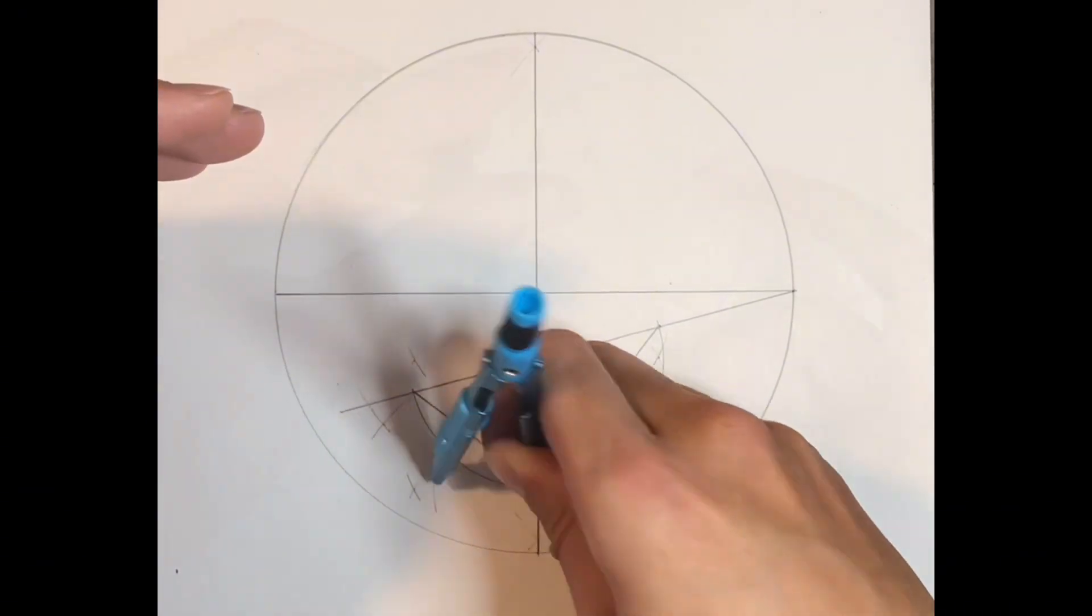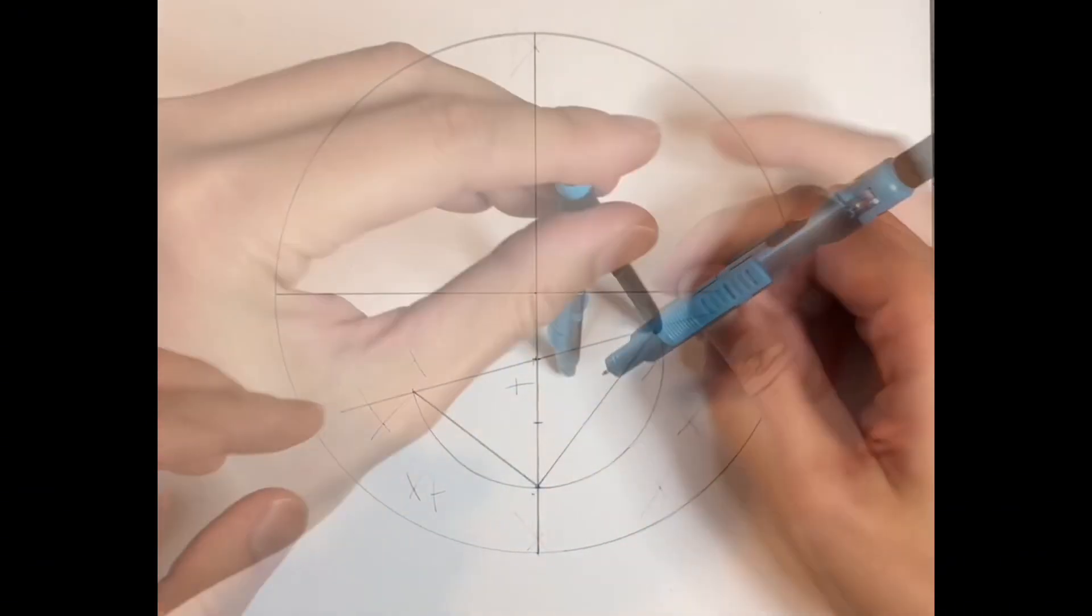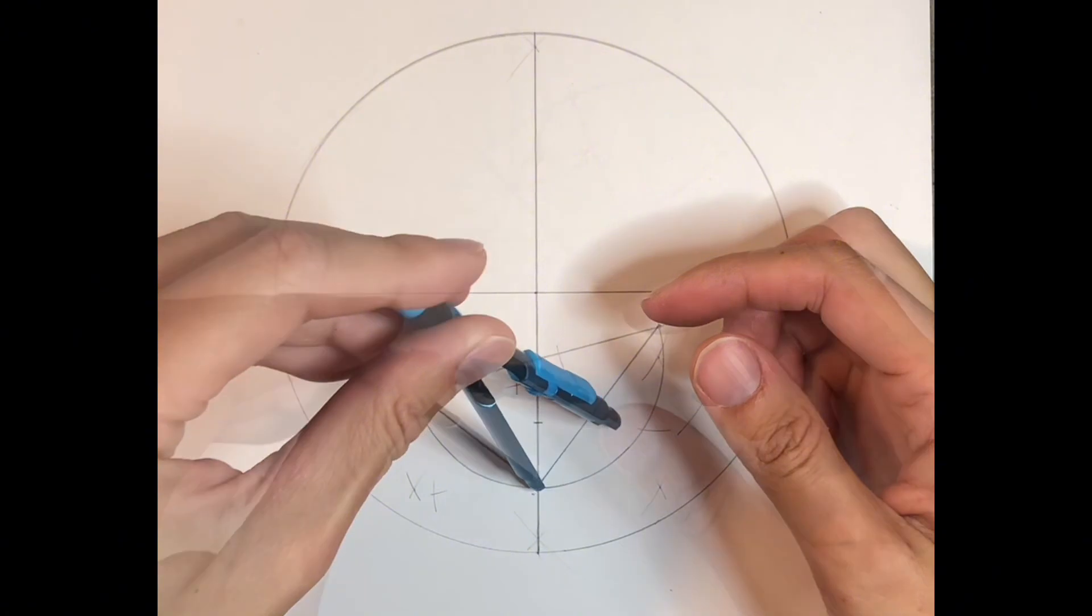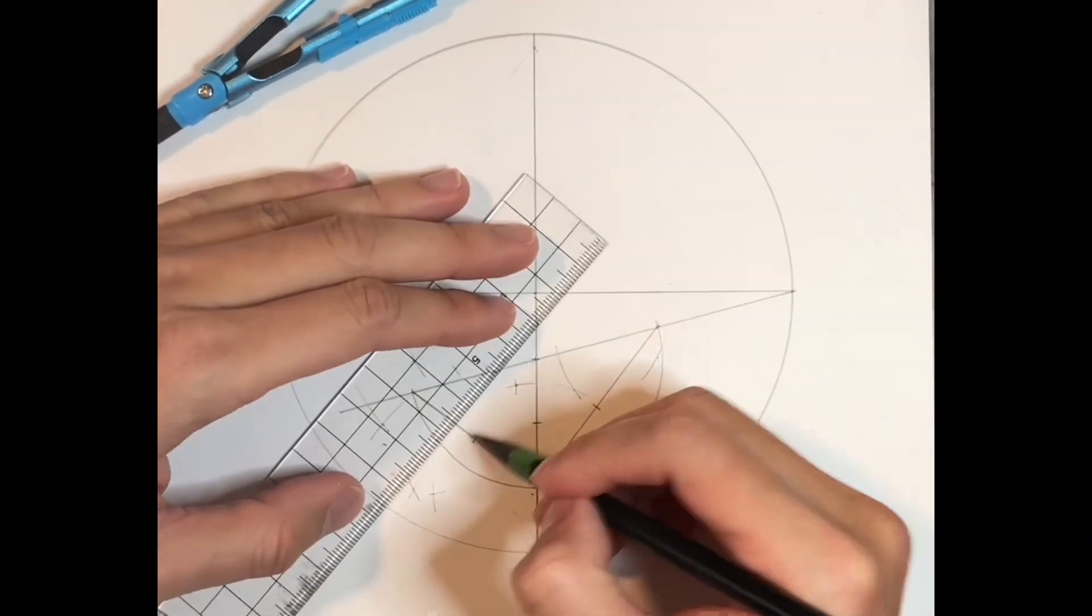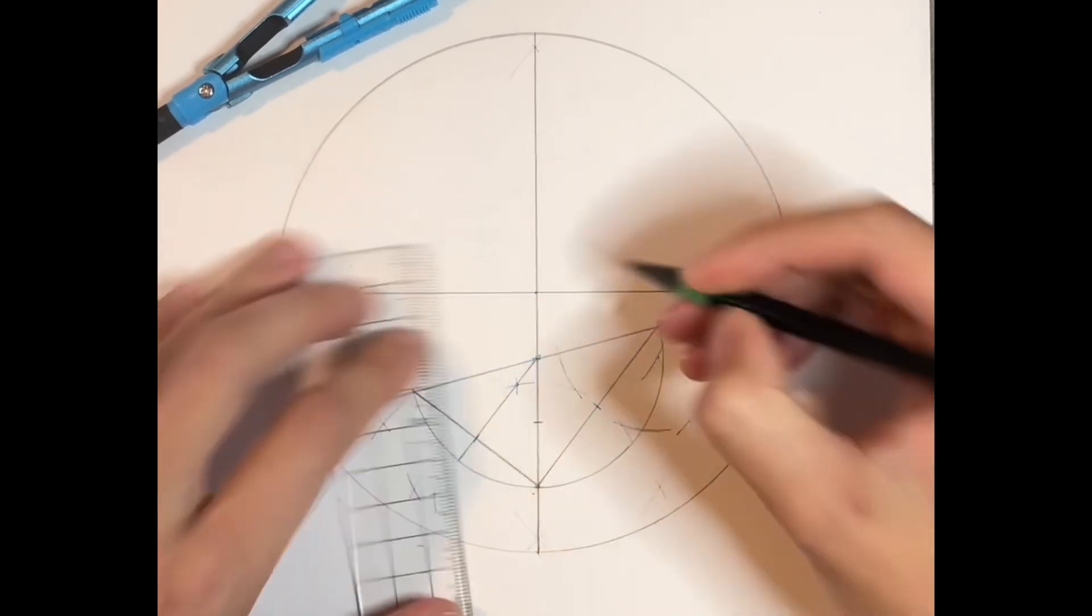Then we're going to find the midpoint. Then we're going to draw this line through here and this.